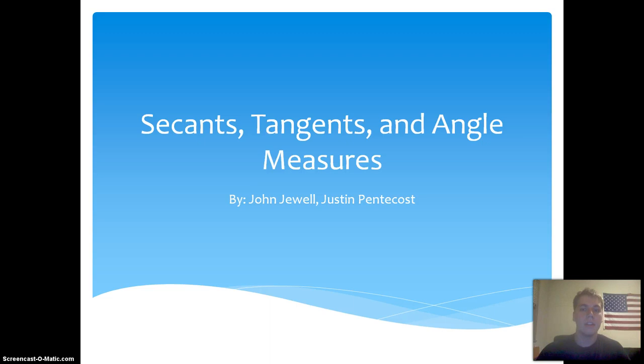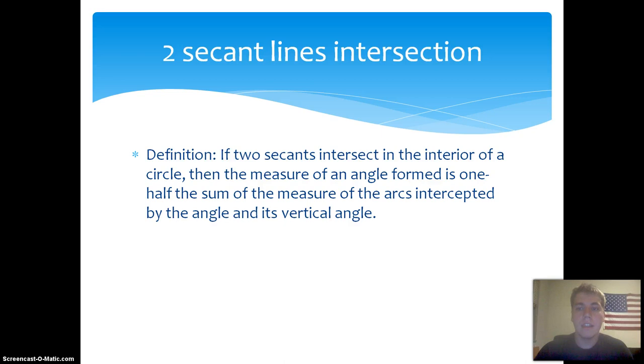The definition of the secant theorem is: if two secants intersect in the interior of the circle, then the measure of an angle formed is one half the sum of the measures of the arcs intercepted by the angle and its vertical angle.